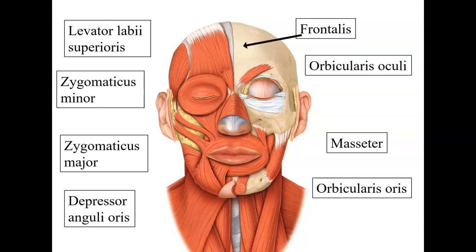Our next muscle is called frontalis, and it is in the frontal region — that's where it gets its name, frontalis — and it's going to raise the eyebrows. Next is the orbicularis oculi. It is the circular muscle around the opening of the eye. Orb means circular, oculi means eye. It is known as a sphincter muscle, so it closes the opening of the eye. That's the job of the orbicularis oculi.